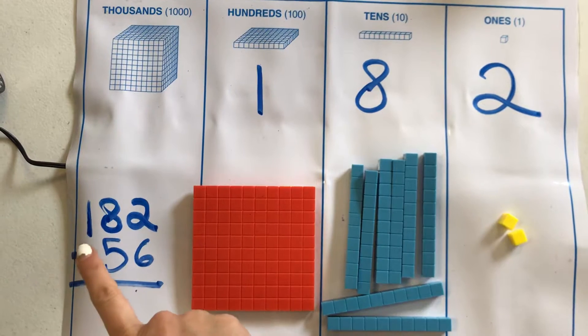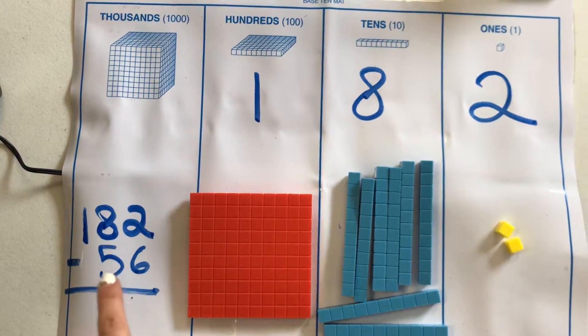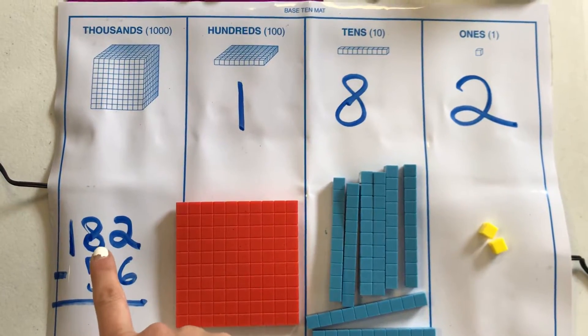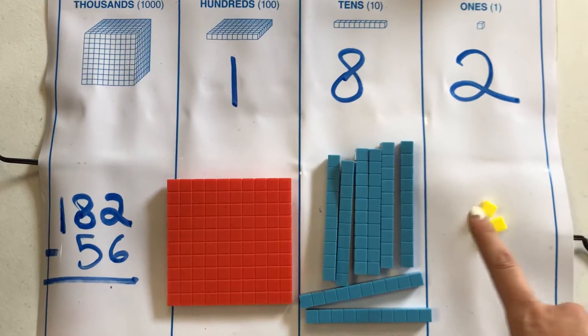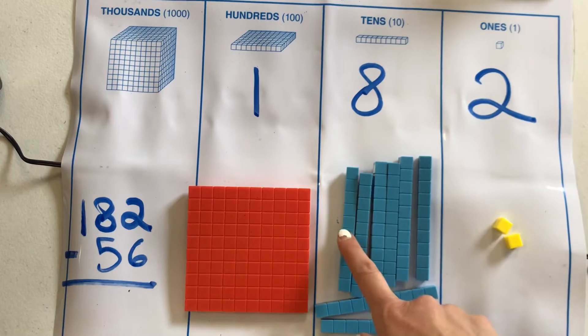Over here, we have the problem 182 minus 56. We know that we can do this problem because the bottom number is smaller than the top number. So let's look. We have our ones place, we have two ones. Tens place, we should have eight tens.